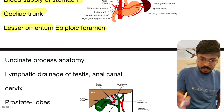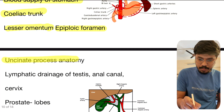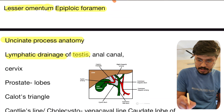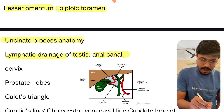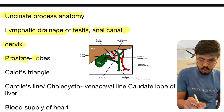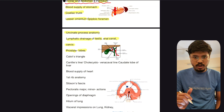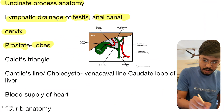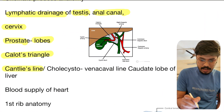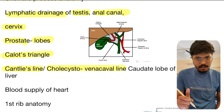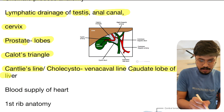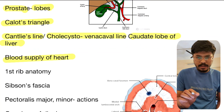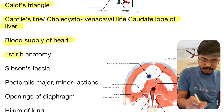Epiploic foramen and uncinate process anatomy are again important topics. Lymphatic drainage of testis, anal canal, cervix, and prostate lobes. Uvula vesicae median lobe. Calot's triangle, Cantlie's line or cholecystovenous line are important. Caudate lobe of liver is another important topic. Blood supply of the heart is very very important. First rib anatomy is also covered.